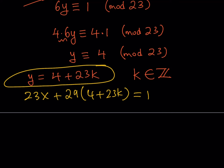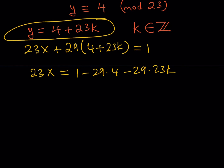I expand and isolate x. I write the right-hand side as 1 minus 29 times 4 minus 29 times 23k. One option is to calculate: 29 times 4 is 116, so 1 minus 116 is negative 115. Another method is to write 29 as 23 + 6, distribute, and get 1 minus 6 times 4 minus 6 times 23k, simplifying to negative 23 minus 6 times 23k.